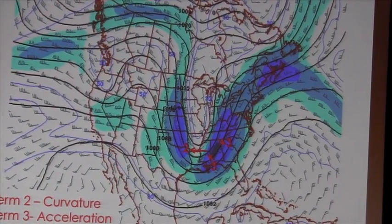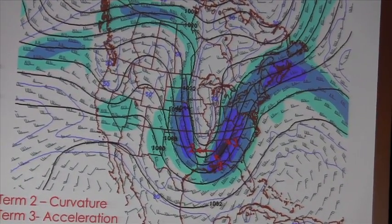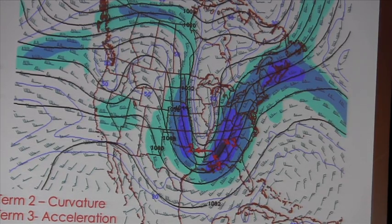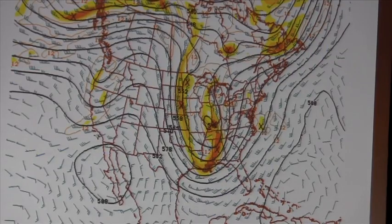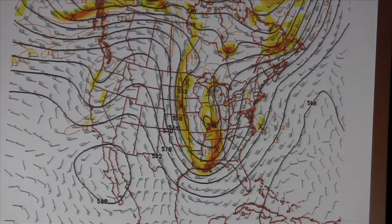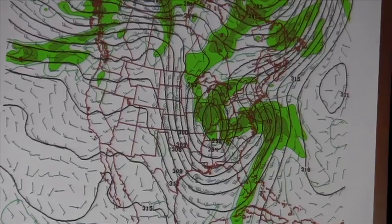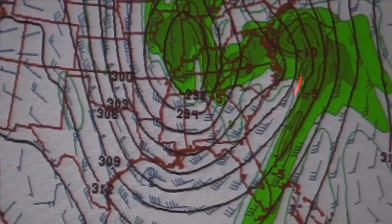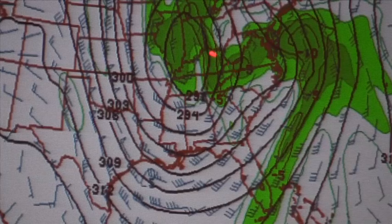For the 36-hour 250 millibar forecast, term two dealing with the curvature of the trough is now affecting Birmingham, pulling mass from over top of Birmingham and creating some lifting. At the 500 millibar level, this vort max is definitely getting a lot stronger and is pretty much just over Birmingham at this time.